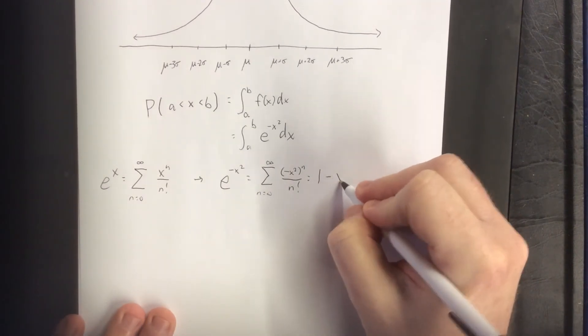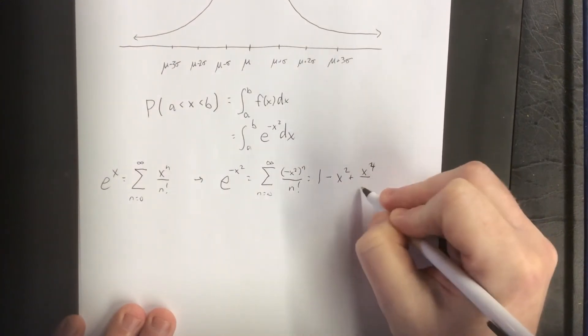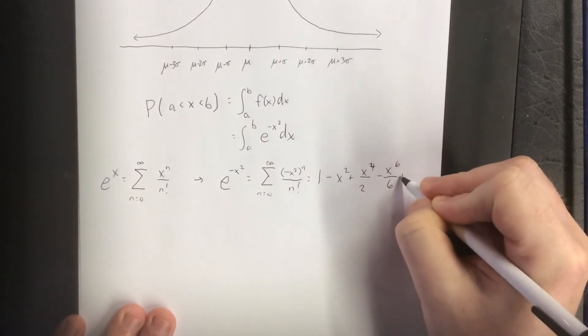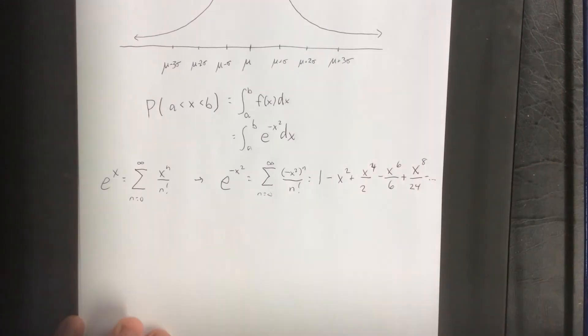This would be 1 minus x squared plus x to the 4th over 2 minus x to the 6th over 6, plus x to the 8th over 24, and so forth and so on.